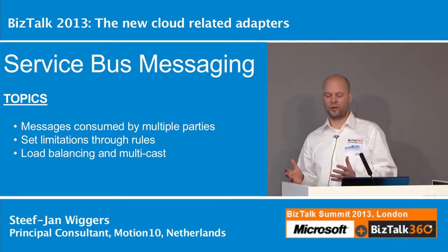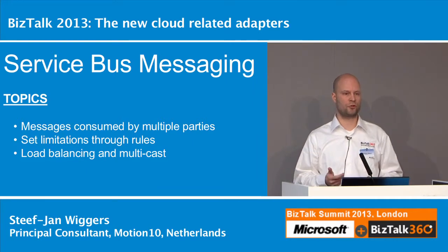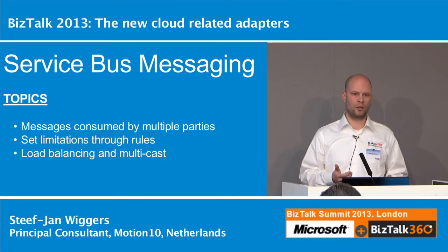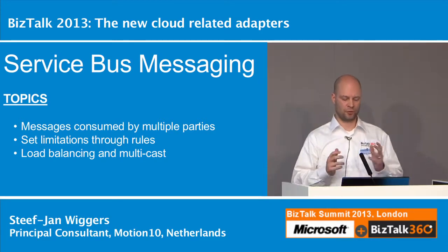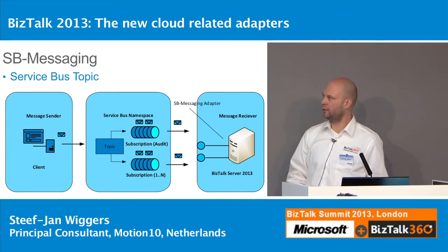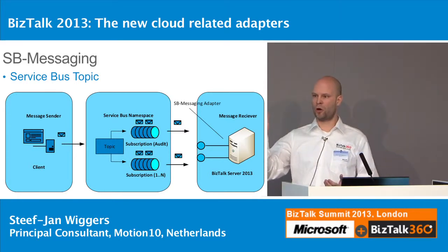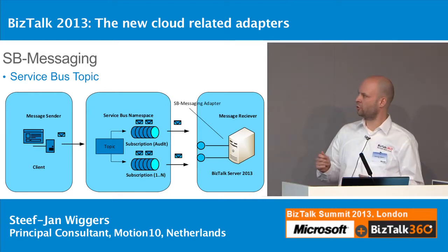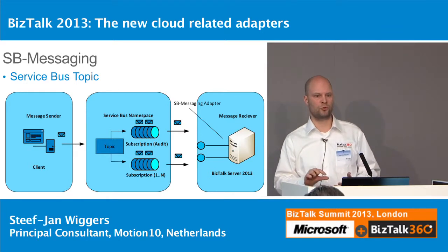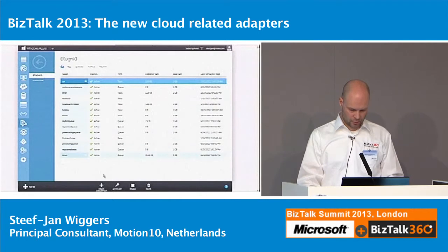Besides queues, the Service Bus also has topics. Topics are similar to queues but support a pub/sub architecture — within topics you can have subscriptions, so you can send one message to multiple parties. Within those subscriptions you can also set limitations or filters through rules. You can do load balancing and load leveling, but also support multicast — similar to how BizTalk's messaging engine supports a pub/sub architecture on-premise. So a client can send messages — for example orders — to a topic, which has multiple subscriptions with optional filter rules, so certain messages end up in certain subscriptions and can be picked up by the Service Bus messaging adapter for further processing.